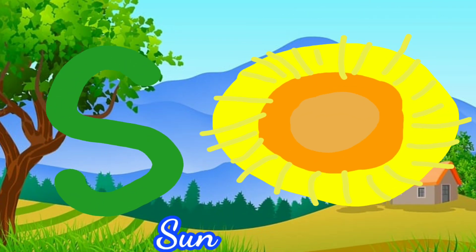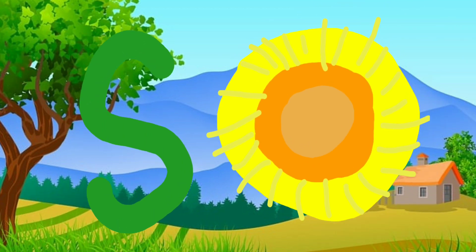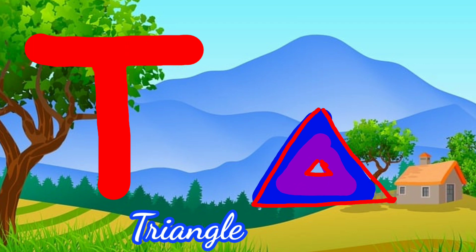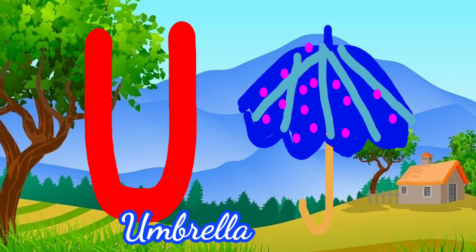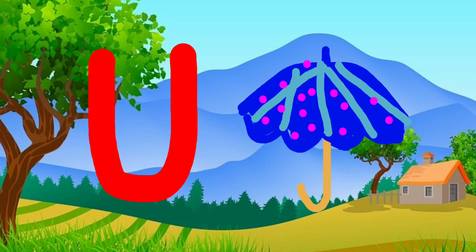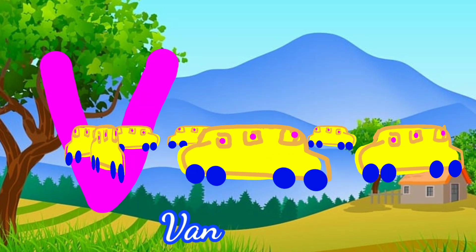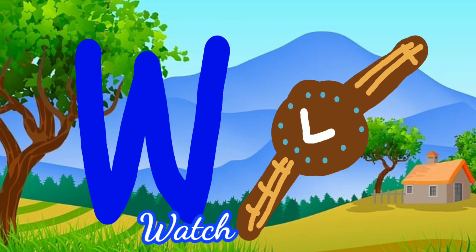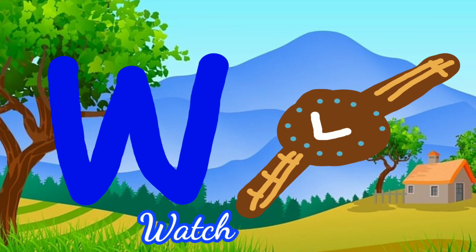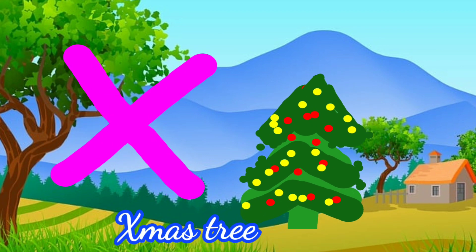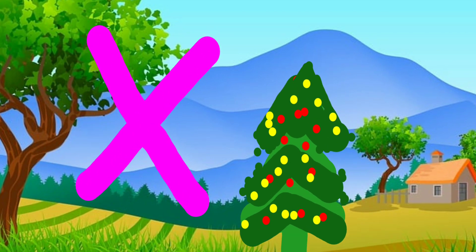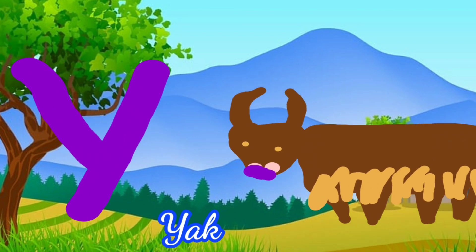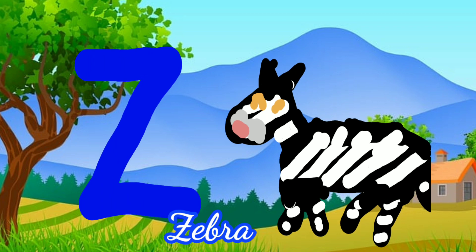S for Sun. T for Triangle. U for Umbrella. V for Van. W for Watch. X for X-mas Tree. Y for Yak. Z for Zebra.